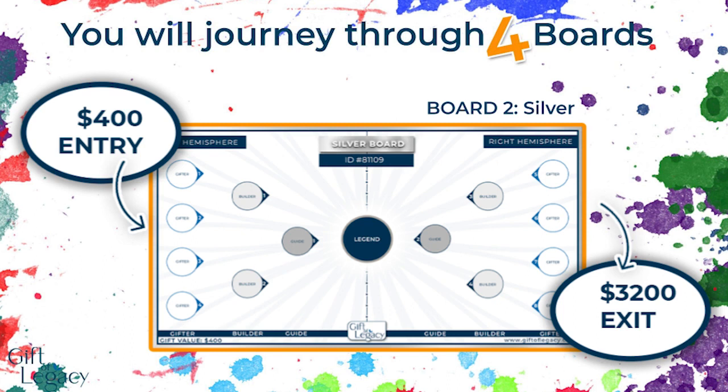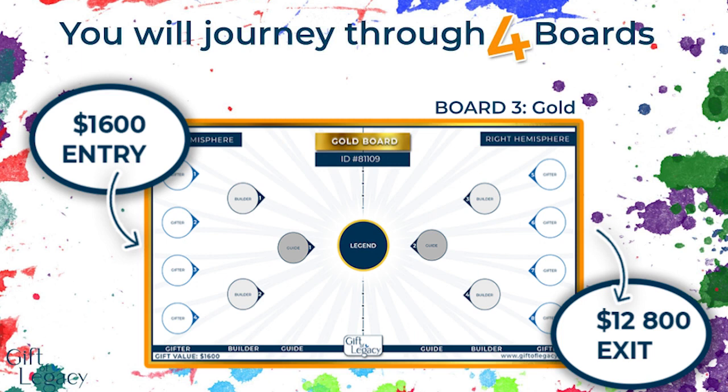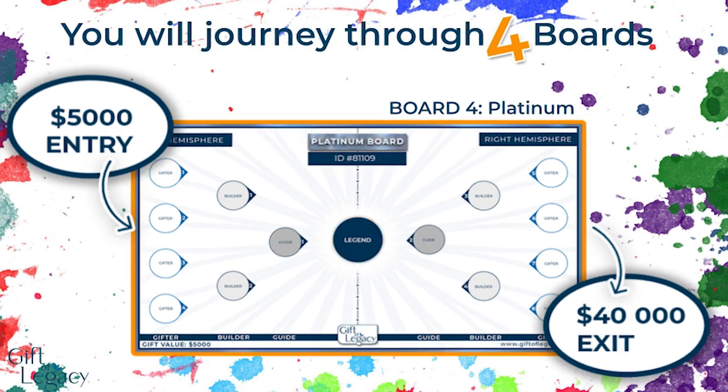From here you will go from the $400 Silver board to the $1,600 Gold board, where you will receive $12,800 in gifts, to the $5,000 Platinum board where you will receive $40,000 in gifts — all perpetual, and all because of that first $100 unconditional gift. The Silver, Gold, and Platinum boards work the same as Bronze, with only the gift value increasing.